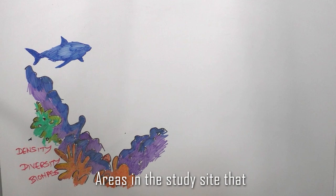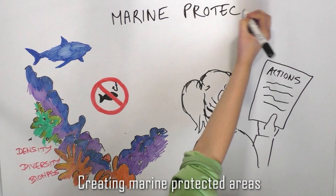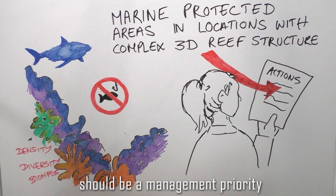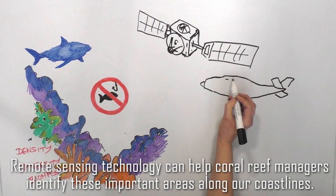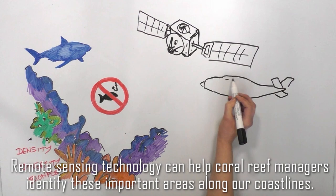Areas in the study site that were protected from fishing showed more fish biomass. Therefore, creating marine protected areas in locations with complex 3D reef structures should be a management priority, and remote sensing technology can help coral reef managers identify these important areas along our coastlines.